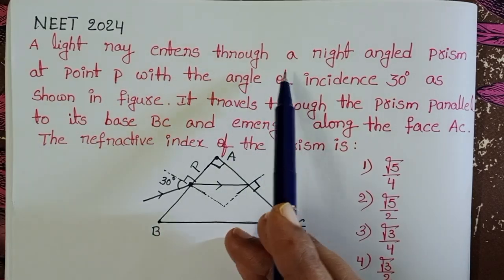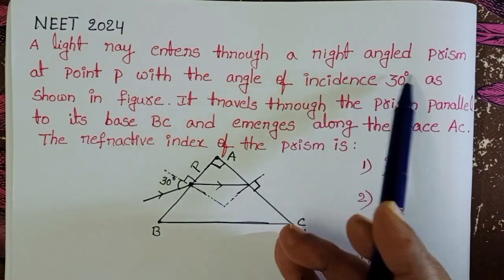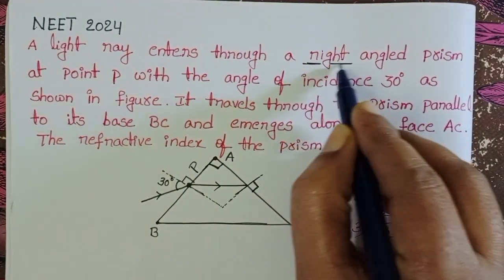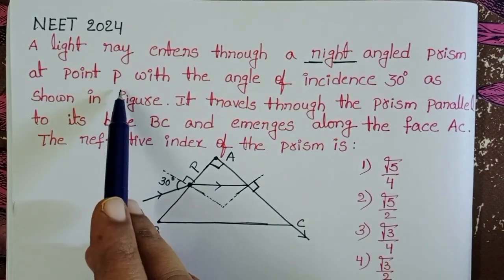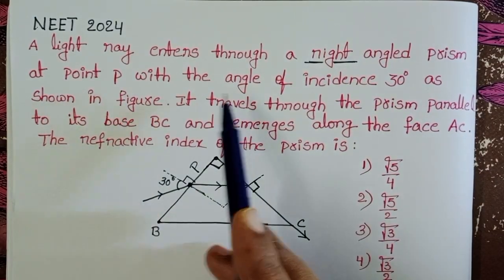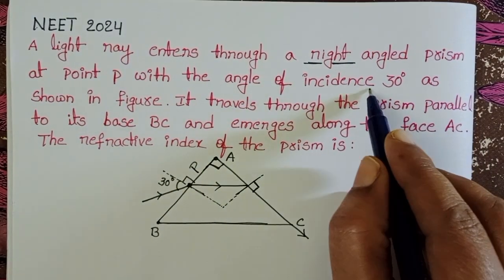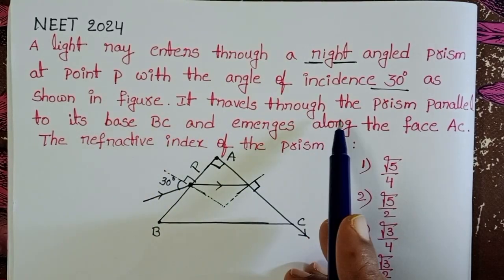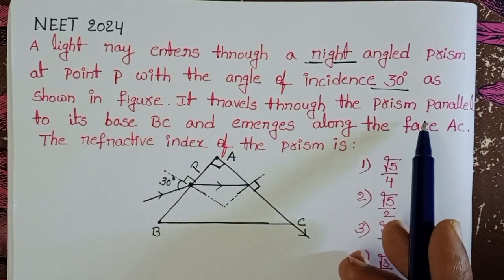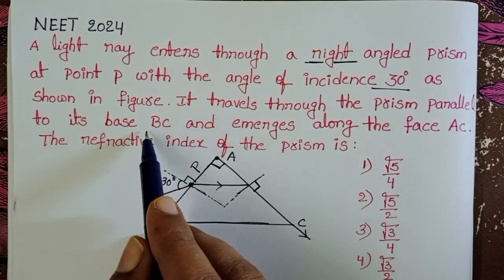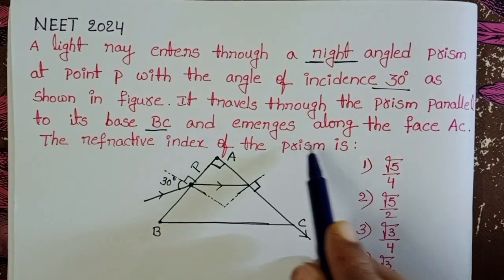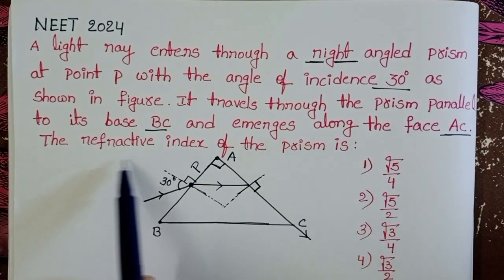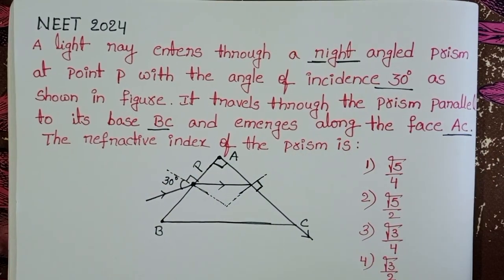A light ray enters through a right-angled prism at point P with an angle of incidence of 30 degrees, as shown in the figure. It travels through the prism parallel to its base BC and emerges along face AC. We need to find the refractive index of the prism.